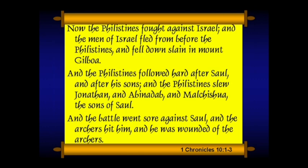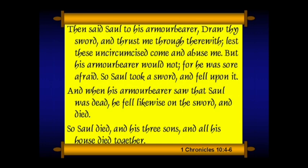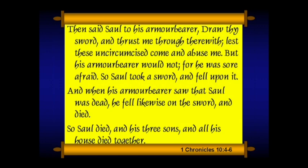1 Chronicles 10, verse 1: 'Now the Philistines fought against Israel, and the men of Israel fled from before the Philistines and fell down slain in Mount Gilboa. And the Philistines followed hard after Saul and after his sons, and the Philistines slew Jonathan, Abinadab, and Malchishua, the sons of Saul. And the battle went sore against Saul, and the archers hit him, and he was wounded of the archers. Then Saul said to his armor-bearer, Draw thy sword and thrust me through therewith, lest these uncircumcised come and abuse me. But his armor-bearer would not, for he was sore afraid.' That's a tough spot to be in — your king wants you to help kill him, and he refuses. So Saul took a sword and fell upon it. And when his armor-bearer saw that Saul was dead, he fell likewise on the sword and died. So Saul died, and his three sons, and all his house, died together.